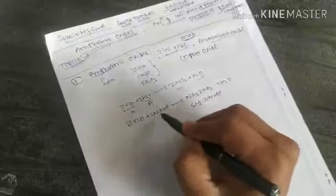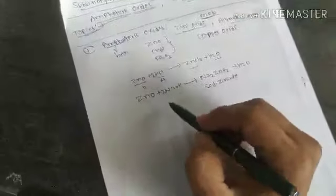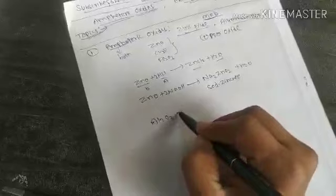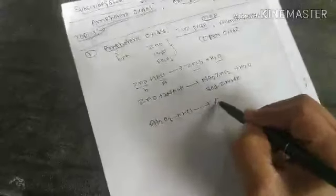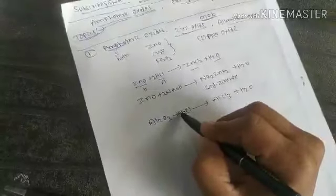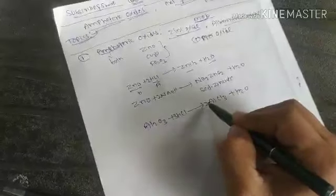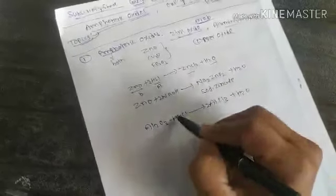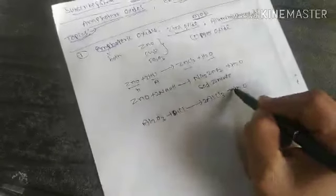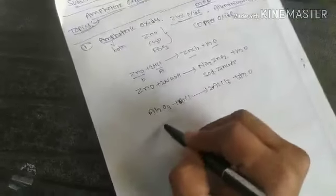Another example: aluminum oxide (Al₂O₃) is amphoteric, so it reacts with hydrochloric acid to form AlCl₃ and water. To balance: Al₂ gives 2 Al, so we need 2 AlCl₃, meaning 6 HCl is needed on the left, and 3 H₂O on the right. Three oxygen on each side — completely balanced.